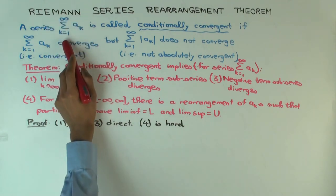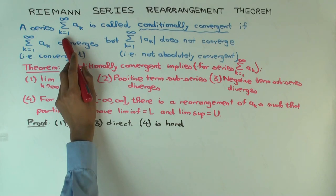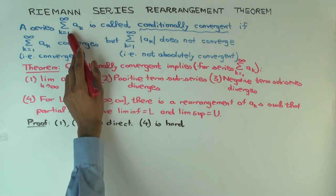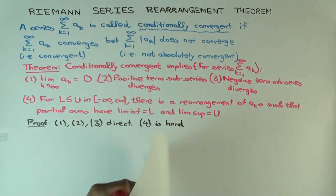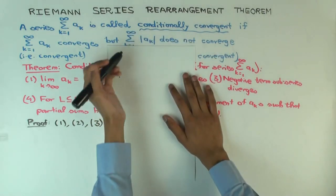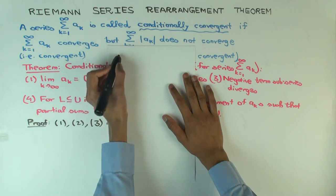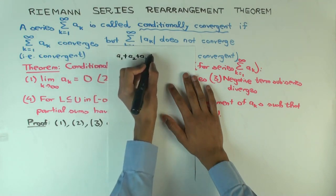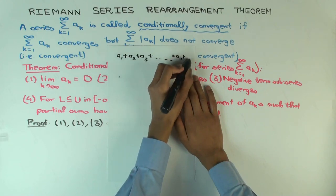How is the sum defined? It's defined as a limit of something. If you want to add up infinitely many terms, you cannot add them all up at once. So you have a series a1 plus a2 plus a3, up to the nth term.